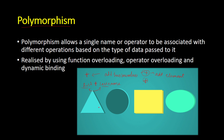Similarly, instead of having three separate functions to calculate the area of a square, rectangle, and triangle, we can have a single common function called area that calculates any shape's area based on the input given. This single function does multiple functionalities. Polymorphism allows a single name or operator to be associated with different operations based on the type of data passed to it, adapting itself accordingly.